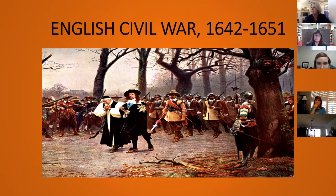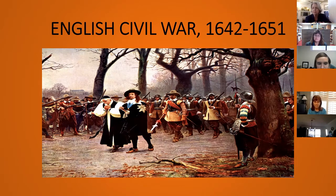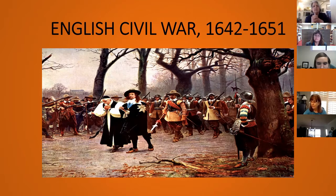Elizabeth had basically said she would not spy in anyone's heart — if you were Catholic or Puritan she wouldn't bother you unless you attempted to overthrow the government. All of that began to change when James came to the throne. That's why we have the Pilgrims and Puritans coming to this country early on. James rules from 1603 until his death in 1625.